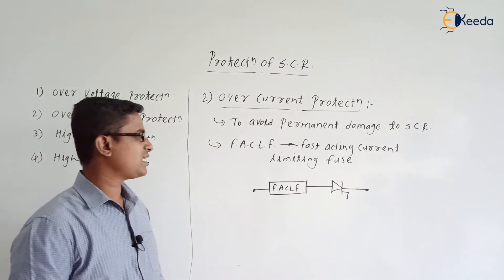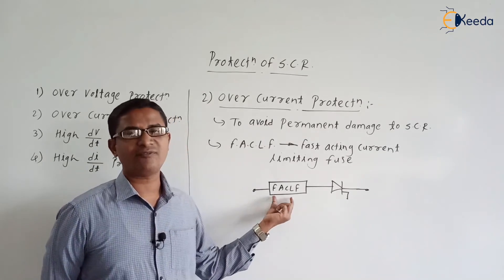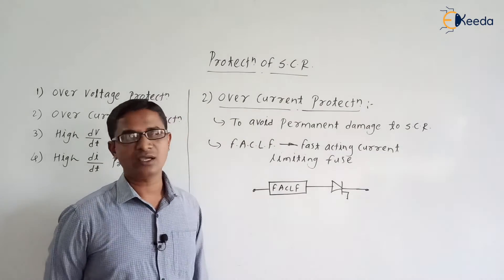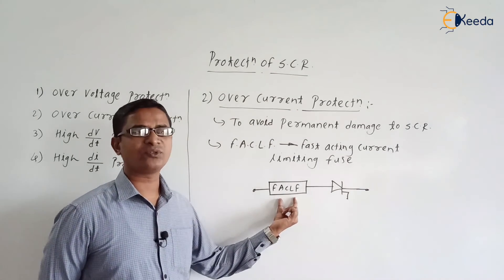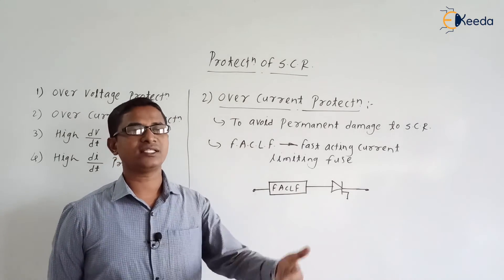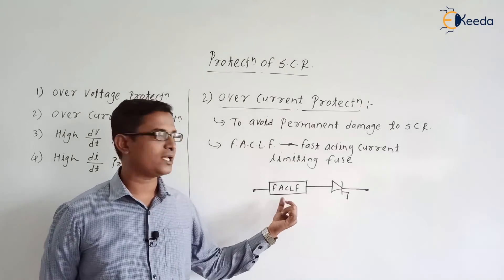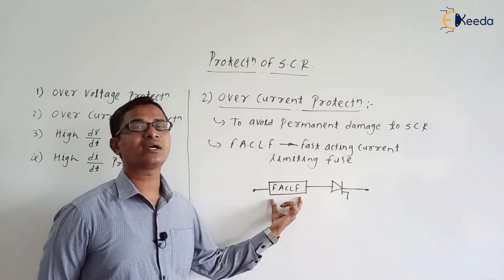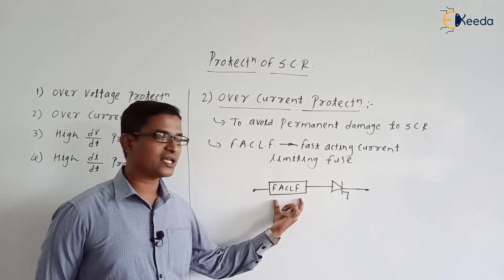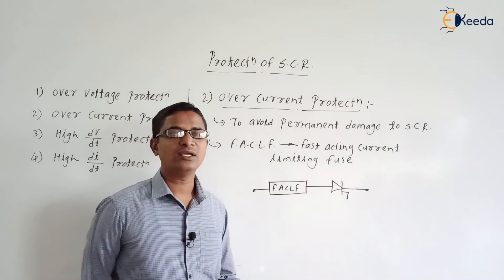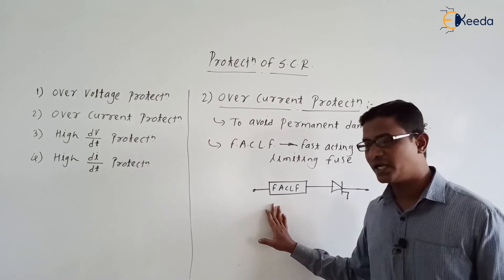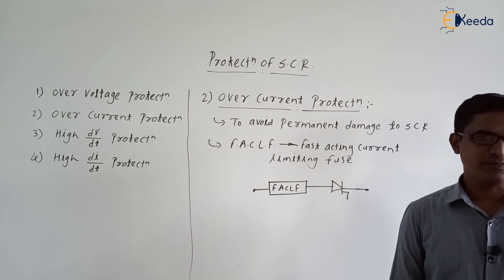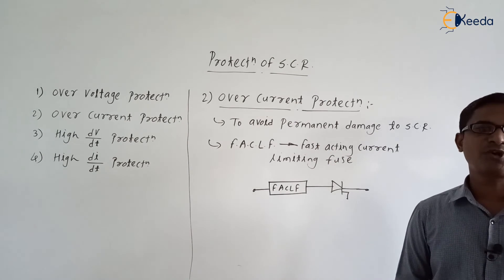The FACLF works like a simple fuse. Every FACLF has a current rating, which should be the same as the current rating of the SCR. When the current flowing through the FACLF increases beyond its rating, the fuse will melt and act as an open circuit. In this way, the FACLF protects the SCR against over current.